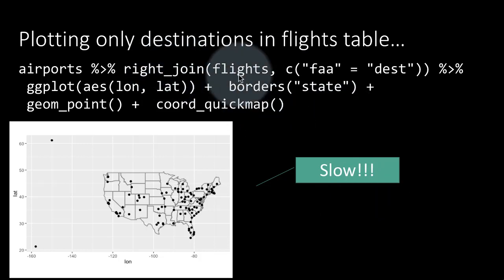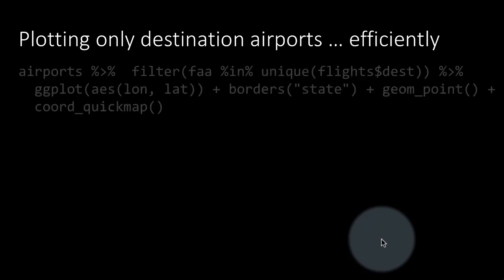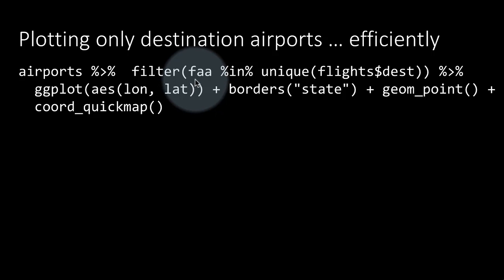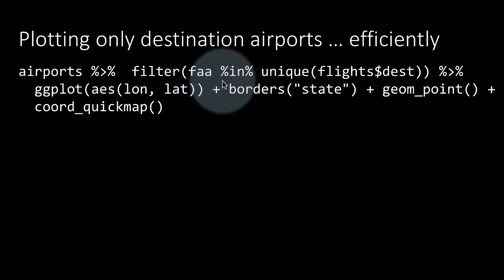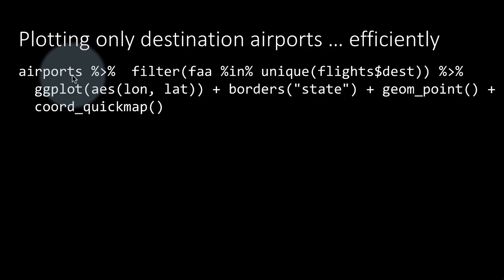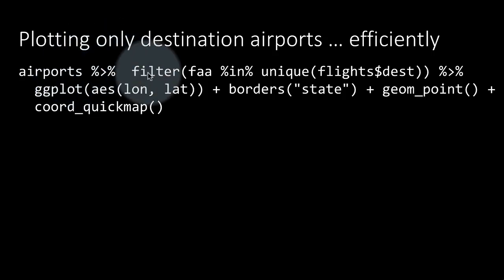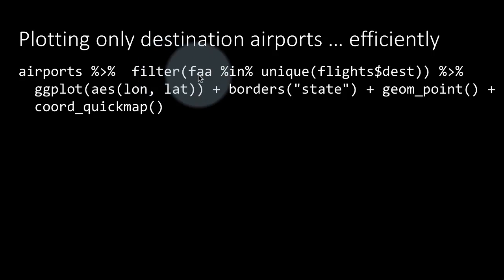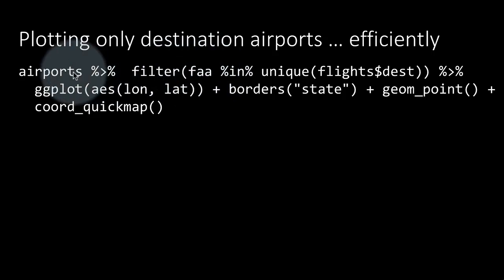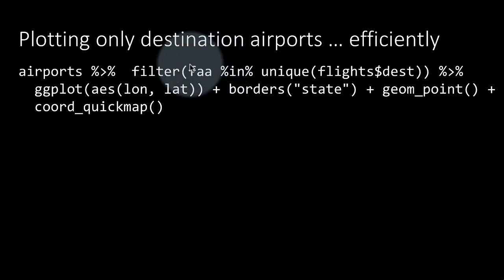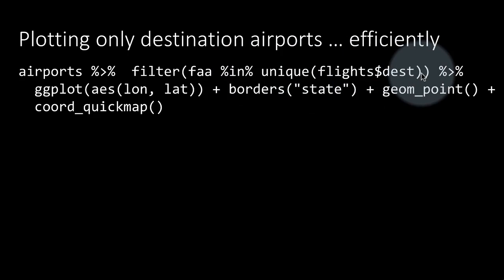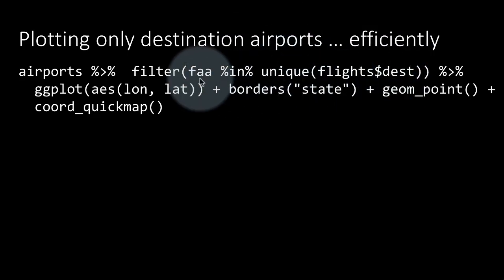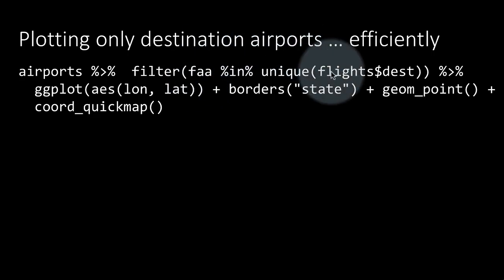By filtering this appropriately. So to do this efficiently, what we are saying is filter faa. That is, we are taking airports and we are filtering the airports table based on only those faa, which is the column name in the airports table for the airports. We are saying consider only those airports which are in unique flights dollar dest. That is, take the flights table, take all the unique destinations and retain only those faa columns which are in this list.